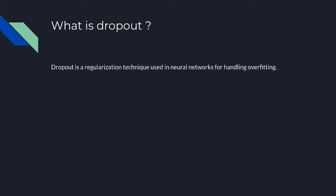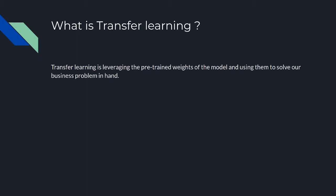What is dropout? Dropout is a regularization technique used in neural networks for handling overfitting. What is transfer learning? Transfer learning is leveraging the pre-trained weights of existing models and using them to solve your business problem at hand — you already have a trained model with lots of parameters, and you leverage that to solve your problem statement.